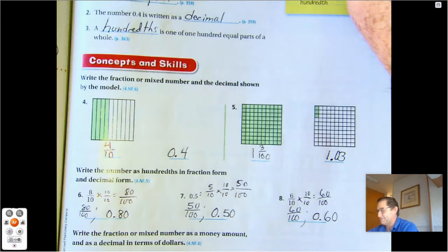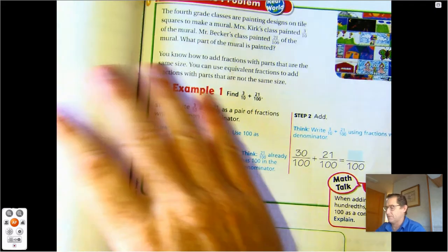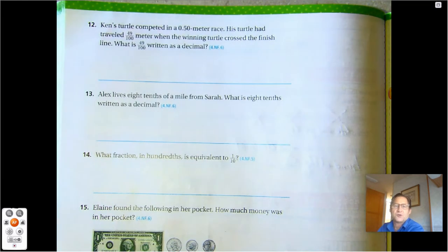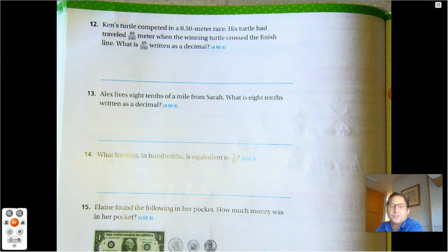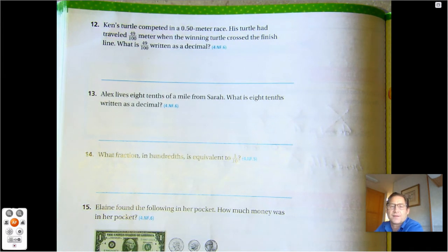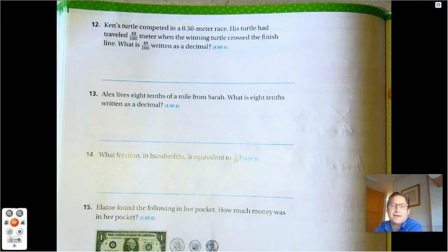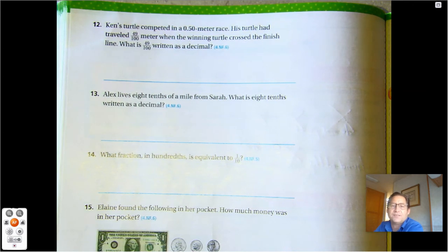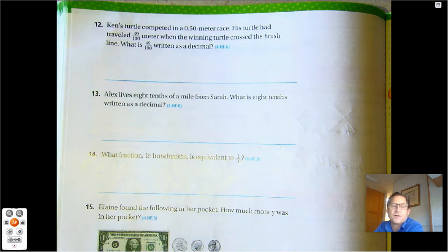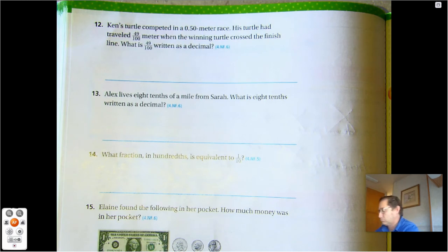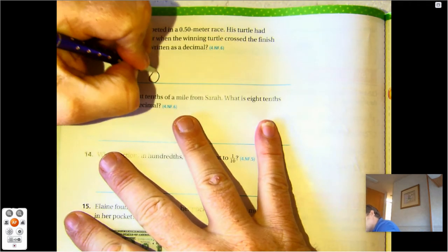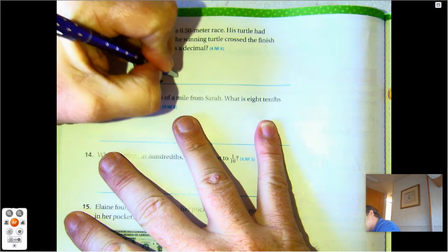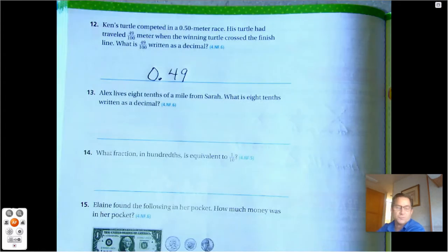Number twelve. Ken's turtle competed in a fifty hundredth meter race. His turtle had traveled forty-nine hundredths meter when the winning turtle crossed the finish line. What is forty-nine hundredths written as a decimal? 0.49.